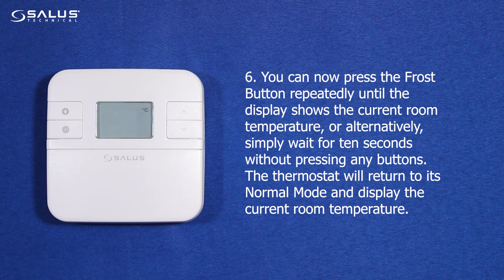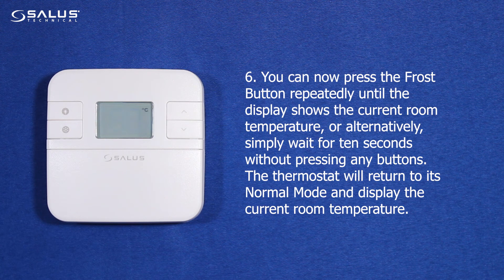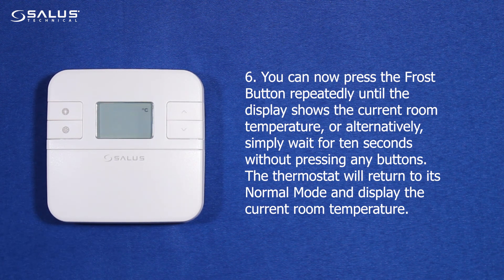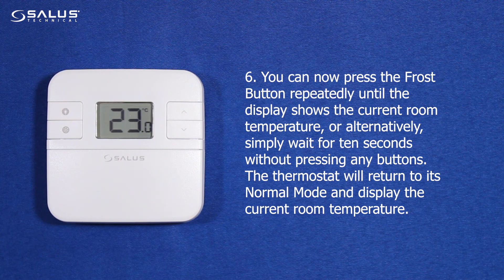Step 6: You can now press the frost button repeatedly until the display shows the current room temperature, or alternatively, simply wait for 10 seconds without pressing any buttons. The thermostat will return to its normal mode and display the current room temperature.